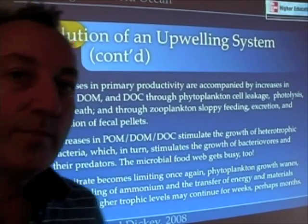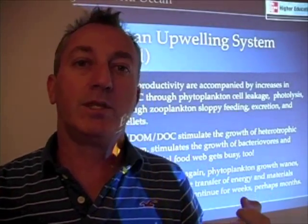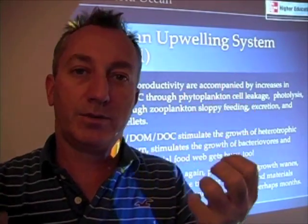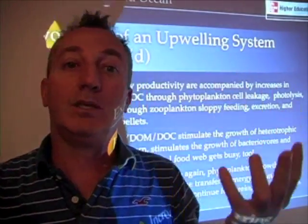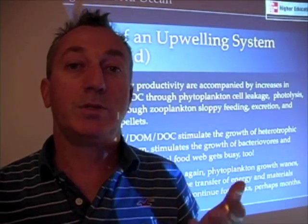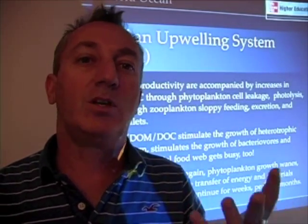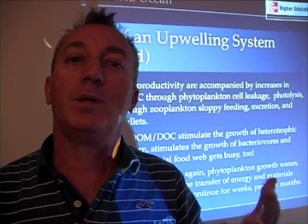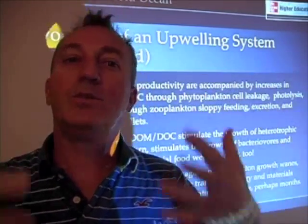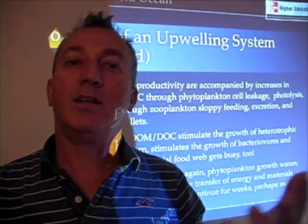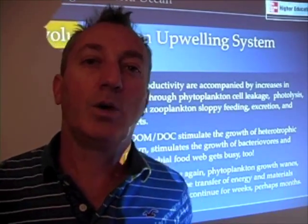As diatoms absorb all that nitrate and nitrate becomes limiting again, phytoplankton growth slows down and the whole food web slows down, transitioning back to the microbial food web. So we go from nitrate-depleted conditions — in which we have a well-functioning microbial food web — to nitrate-rich conditions when upwelling occurs, which makes the classical food web flourish, and then as that system dies down we return to steady-state conditions that favor the microbial food web.